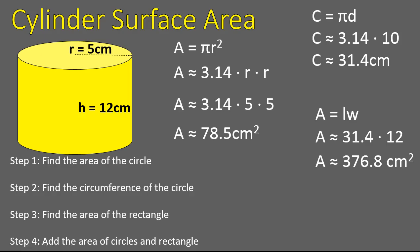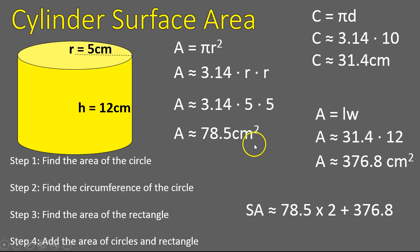Our final surface area — step four — is that we add the area of the circle, 78.5 square centimeters, multiplied times two because there are two of them, and then we add the surface area of the rectangle, 376.8. That gives us an approximate surface area of 533.8 square centimeters. That is how you calculate the surface area of a cylinder. It has lots of steps, but if you follow them closely you'll be able to get that surface area.